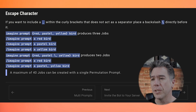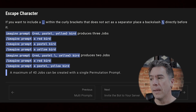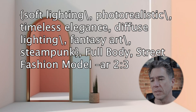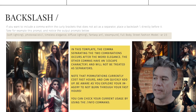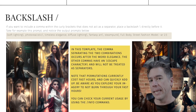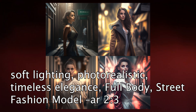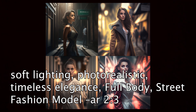Via Mid Journey documentation, if you want to include a comma within the curly brackets that does not act as a separator, place a backslash directly before it. This was an example prompt that was provided — do note that after the backslashes there is a comma. I did add 'full body street fashion model, aspect ratio 2:3' to the end of that prompt just to give it a subject. When we ran it, our backslashes actually created a divide between one half of the prompt and the other.